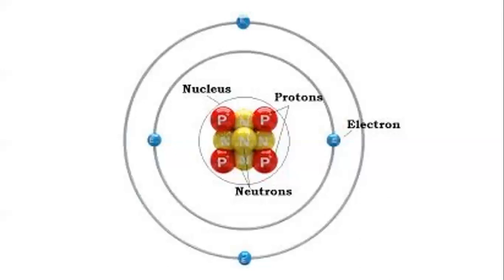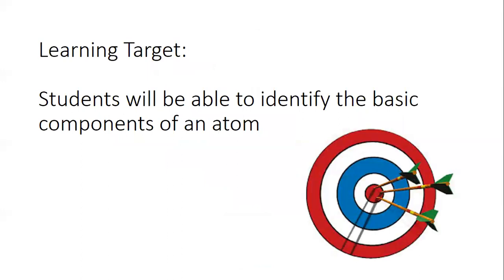Electrons are very small in mass compared with protons and neutrons. It takes more than one thousand eight hundred electrons to equal the mass of one proton. In fact, the mass of an electron is so small that it is usually considered to be zero.